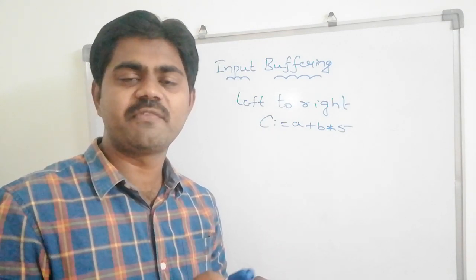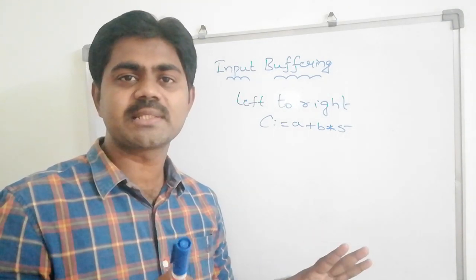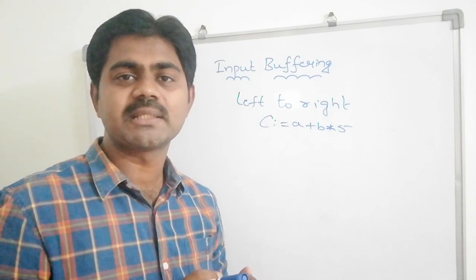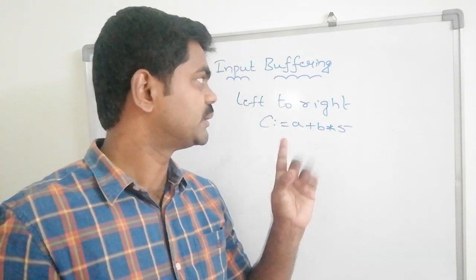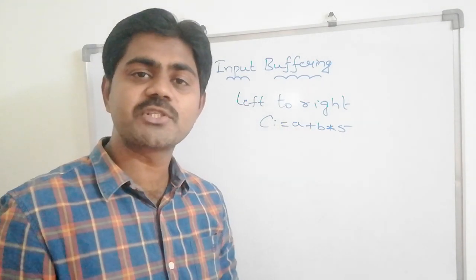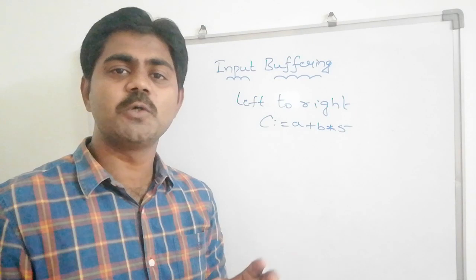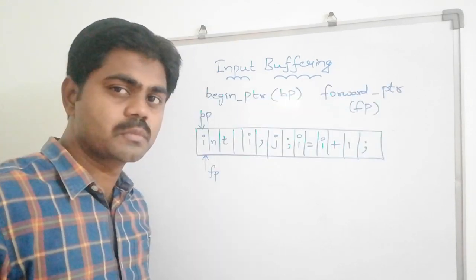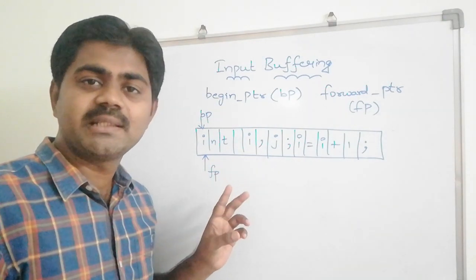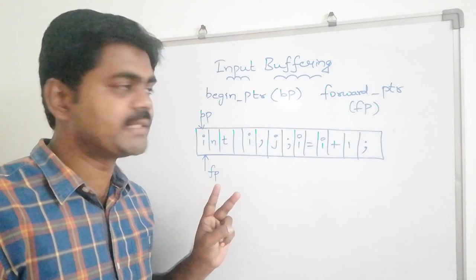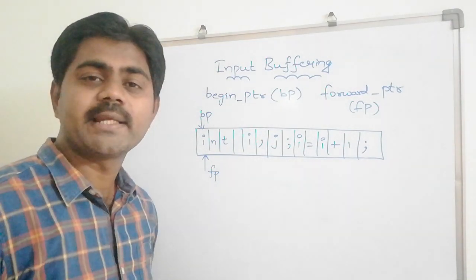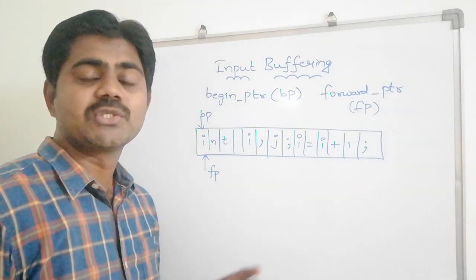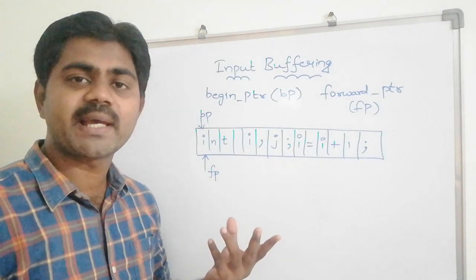Input buffering is nothing but some storage — we store some source input. In order to process the input string, we use two pointers. The first is begin pointer, which we call BP, and the second is forward pointer, which we call FP.